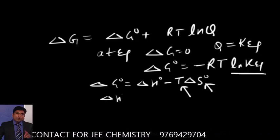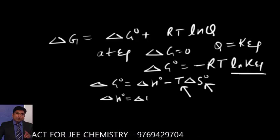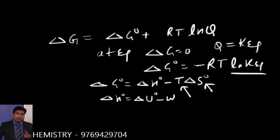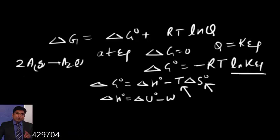Delta H0 we can write as delta U0 minus work done. And for the given reaction, 2A gas giving A2 gas, work done we can write as minus delta N RT.